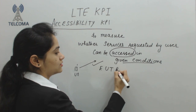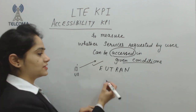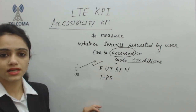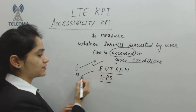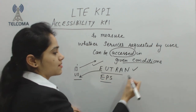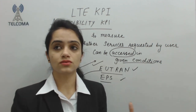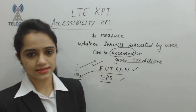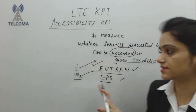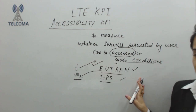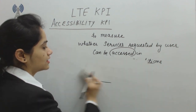The conditions are provided by E-UTRAN, which is the Evolved Universal Terrestrial Radio Access Network, and the Evolved Packet Service. Service will be granted to the user equipment by either E-UTRAN or the core network. All factors related to whether a requested service can be accessed fall under the Accessibility KPI category. We have two key message types under this: RRC and ERAB.